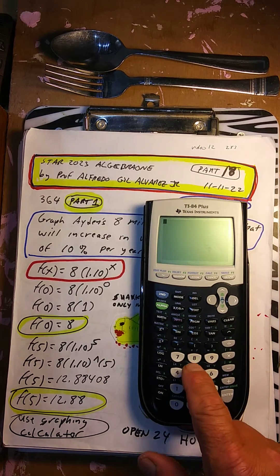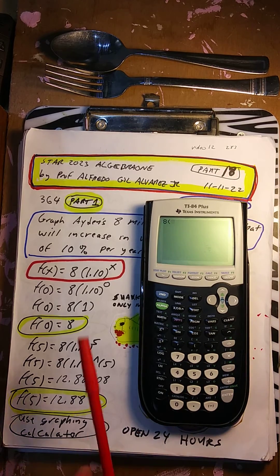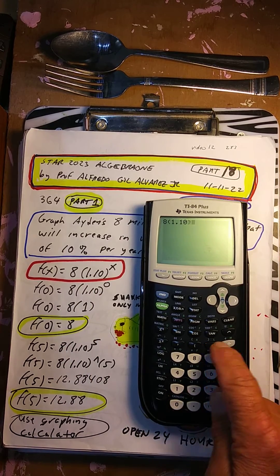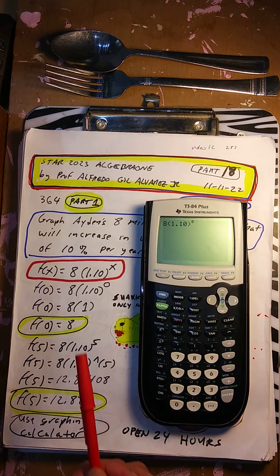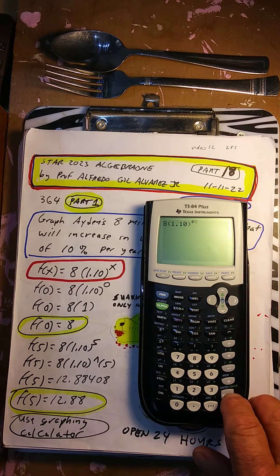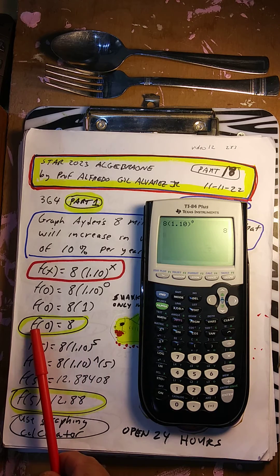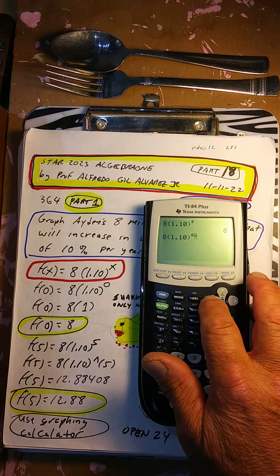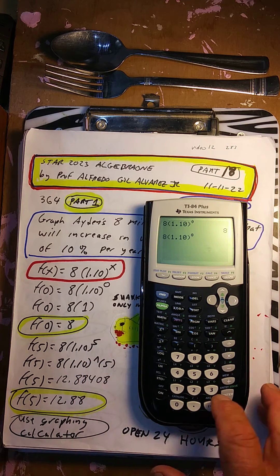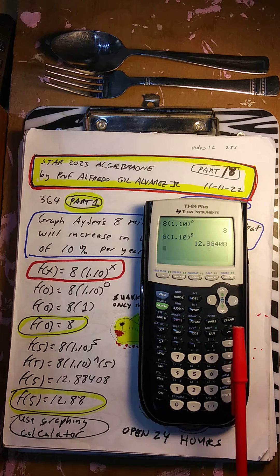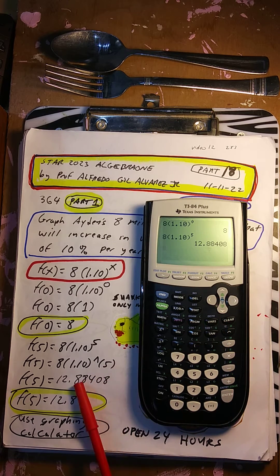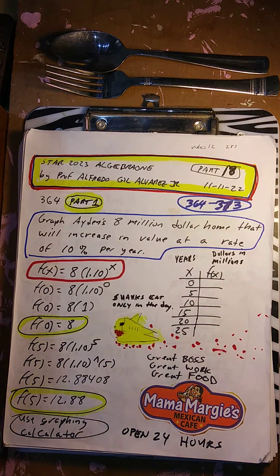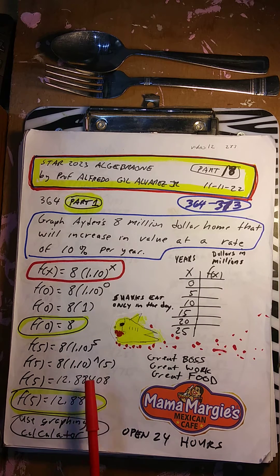We're going to put in 8 parentheses 1.10 to the power of 0, hit enter, and I get 8. f(0) is 8. You can hit second enter and just change the power. The next one's going to be 5, so put a 5, hit enter. We're going to get 12.88408 — round it off to 12.88. So f(0) is 8, and f(5) is 12.88 after rounding.